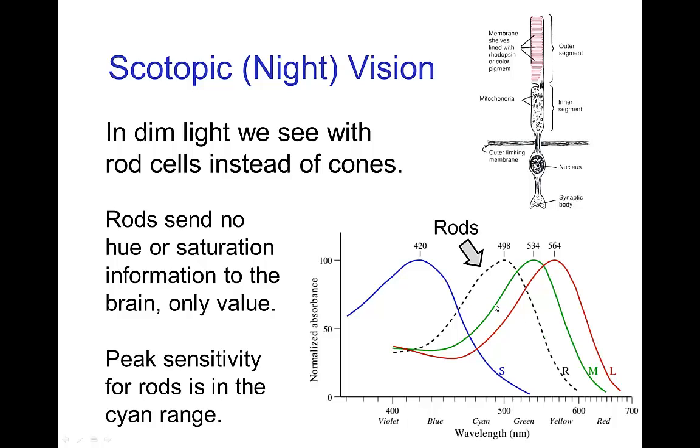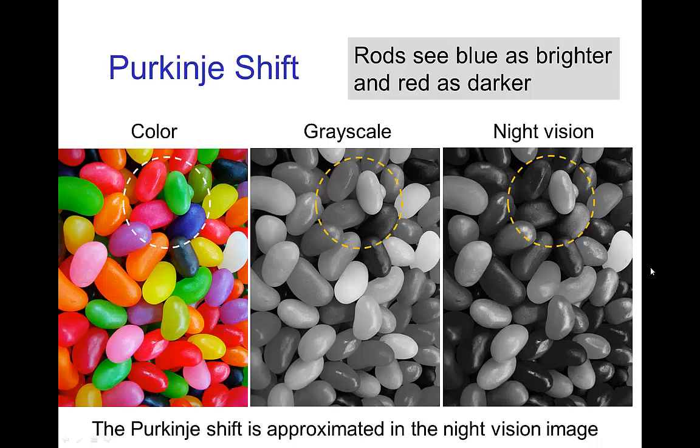Here we have the sensitivity curves for the blue, the green, the red cones, and then the black dotted line is for the rods. You notice that the sensitivity of the rods is closer to the side of the blues compared to the green and red. Because of this we have this so-called Purkinje shift, which is that the rods see blue as brighter and red as darker.